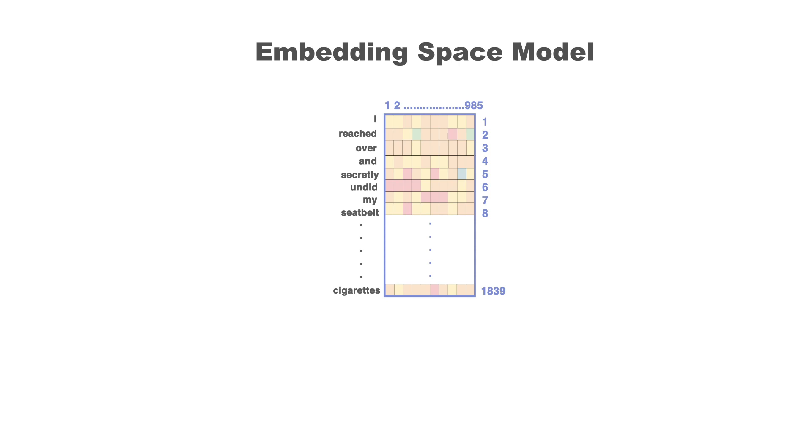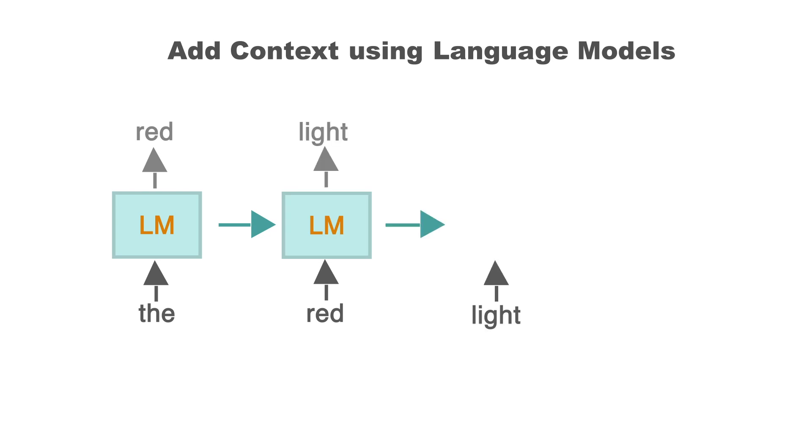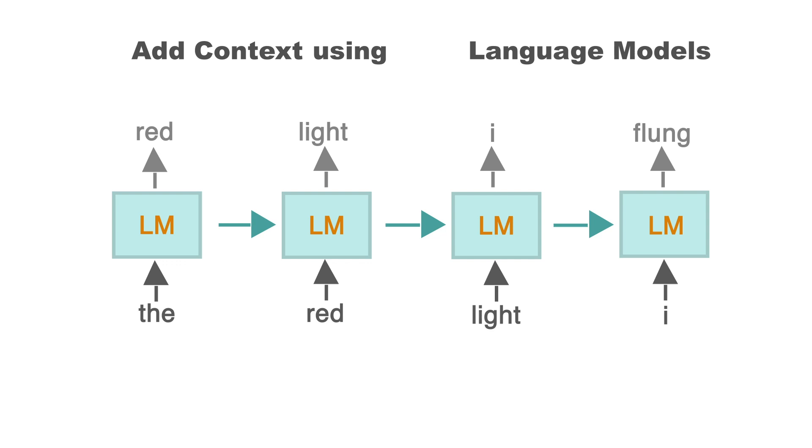The context of a word plays an important role. To add context to these vectors, we make use of a language model. A language model learns to predict the next word in a sequence given the previous words. It typically comprises of a long short term memory network or LSTM.